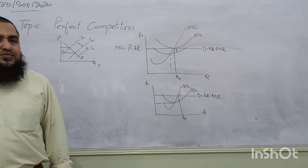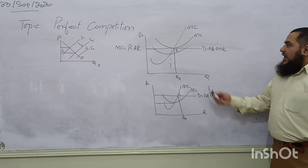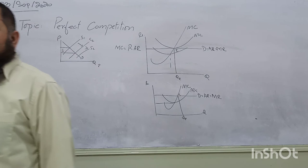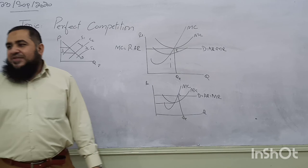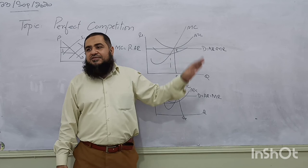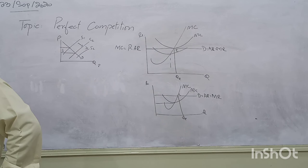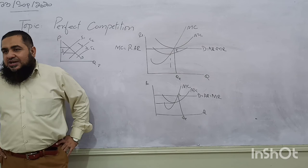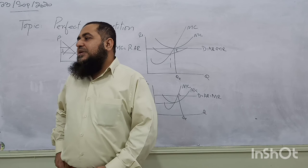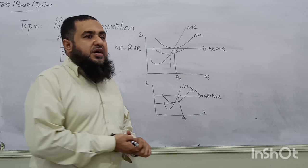Now let me ask: I have drawn the demand curve faced by the firm, which is perfectly elastic — but where is the supply curve of the firm? We have been showing equilibrium without a supply curve till now. In market equilibrium, we say demand and supply are balanced. Where is the supply curve of the firm? First, I will define the shutdown point of the firm, and after the shutdown point, we will define the supply curve of the firm — both in short-run and long-run. That will also conclude our study of perfect competition.